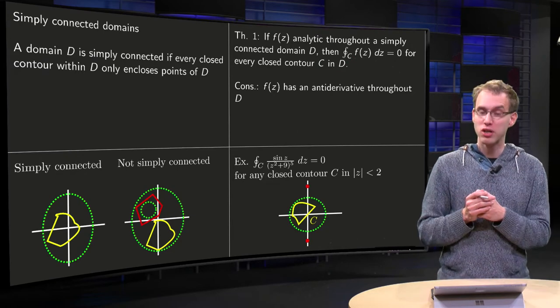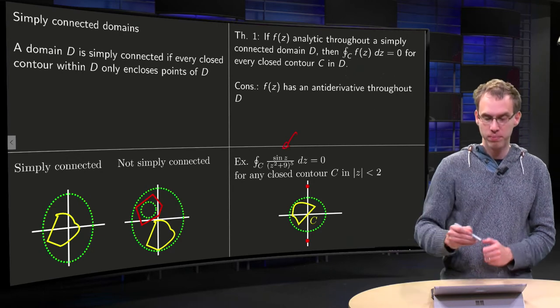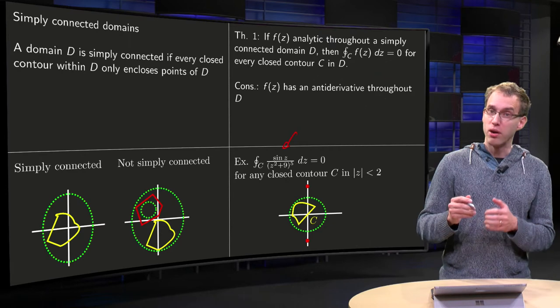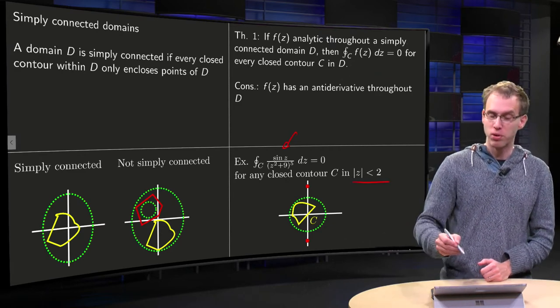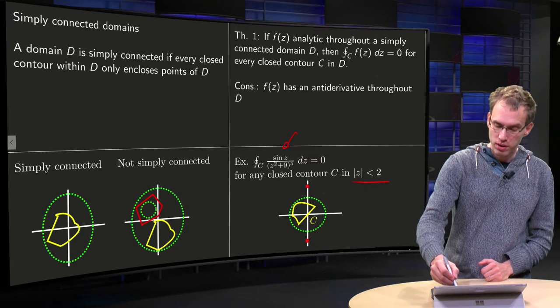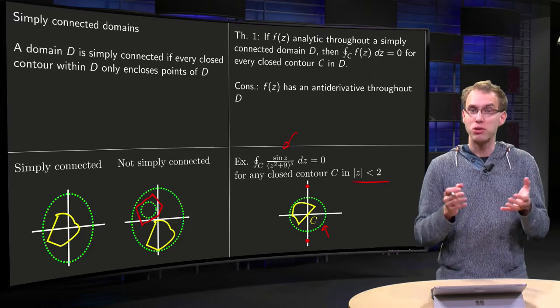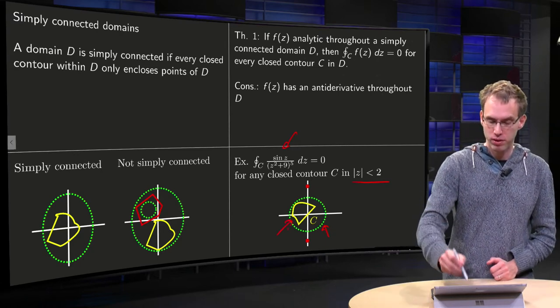Well, let's do a small example, where we have this horrible looking integral over here, where c can be any closed contour in the region where the absolute value of z is smaller than 2. So we have drawn this circle over here, the green circle, so our c can be any closed contour inside this green circle, for example the yellow one over there.